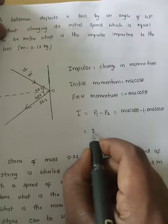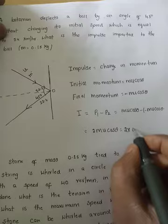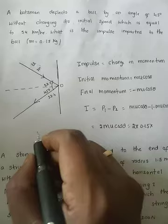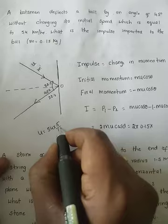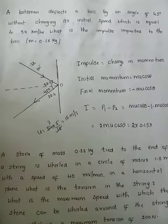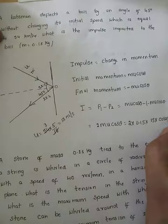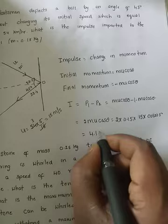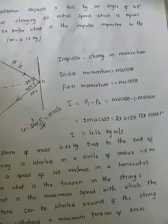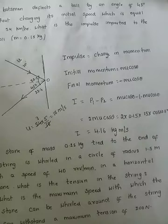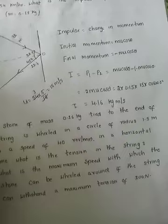So impulse I equals p1 minus p2: m·u·cos(theta) minus (−m·u·cos(theta)), giving us 2·m·u·cos(theta). Substituting values: 2 × 0.15 × 15 × cos(22.5°). The speed 54 km/h converts to 15 m/s. The impulse imparted to the ball is 4.16 kg·m/s.